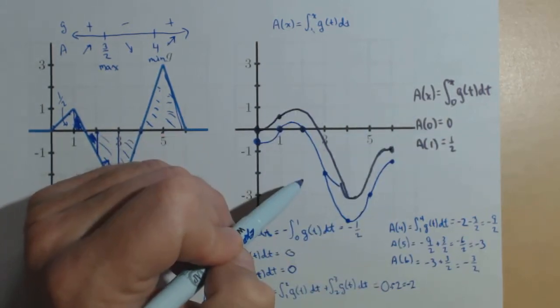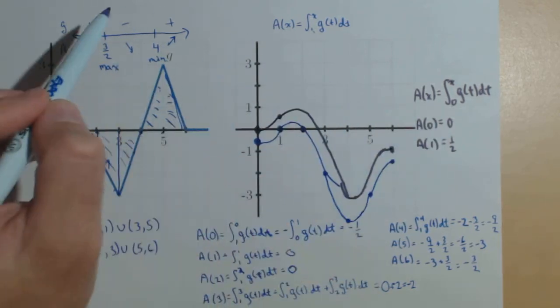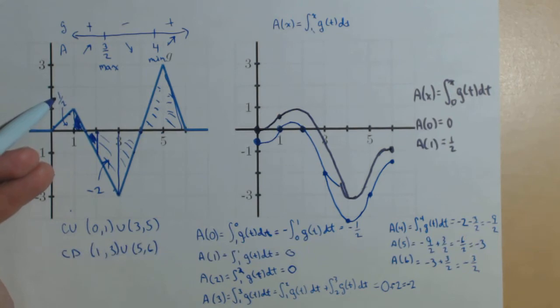So, as we change that lower limit, we get vertical shifts of this antiderivative. But they will all have the same derivative, in this case, g of x.